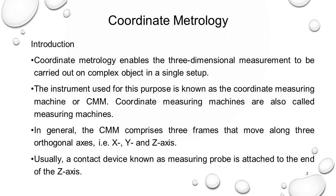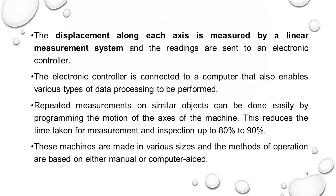That is why it has X, Y and Z axes, and usually the contact device known as measuring probe is attached to the end of the Z axis. The displacement along each axis is measured by a linear measurement system and the measurements are sent to an electronic controller. There is no manual calculation; everything is calculated inbuilt.